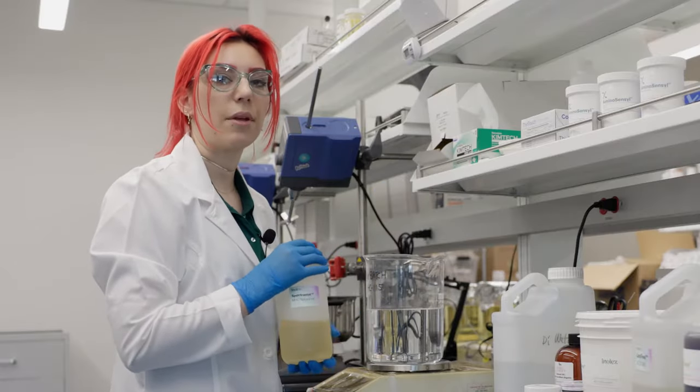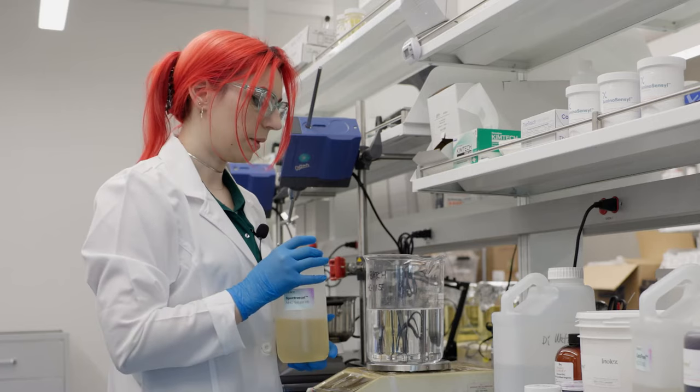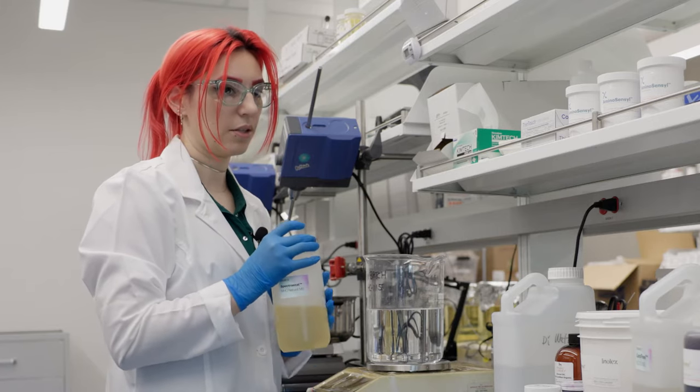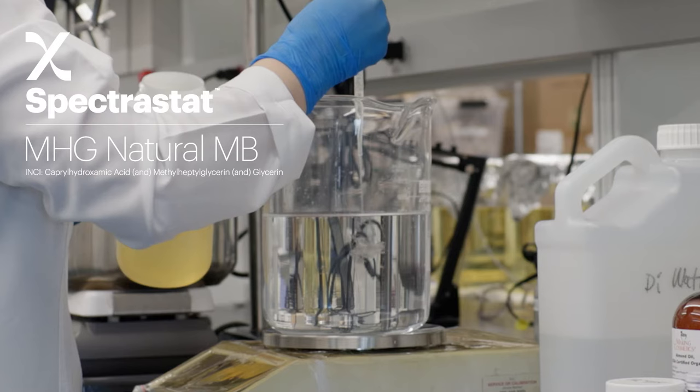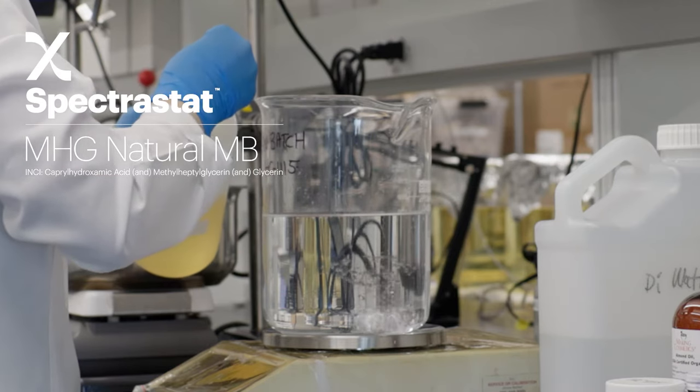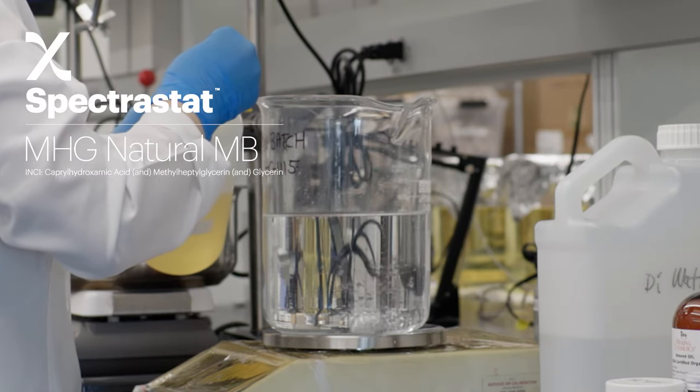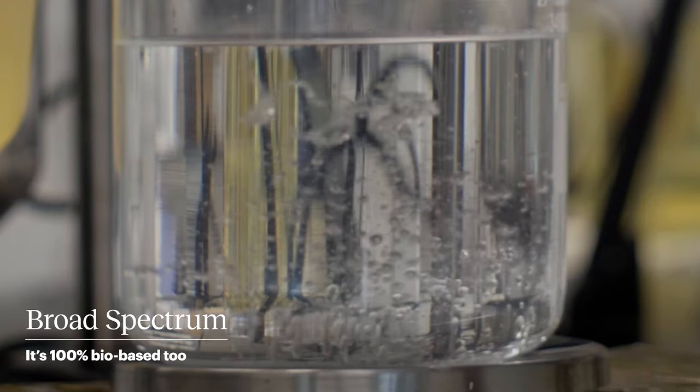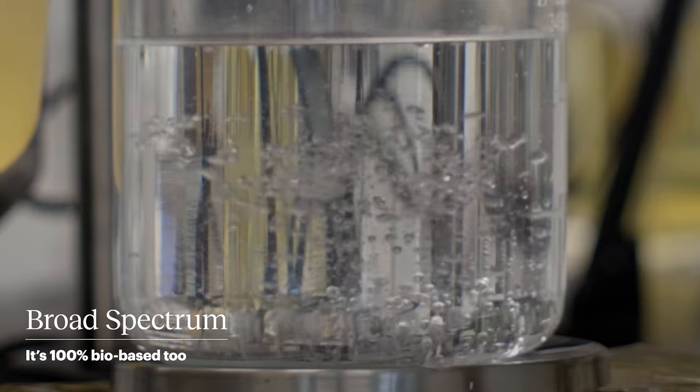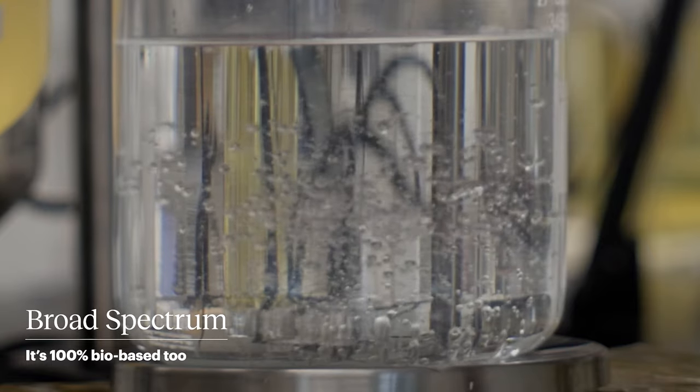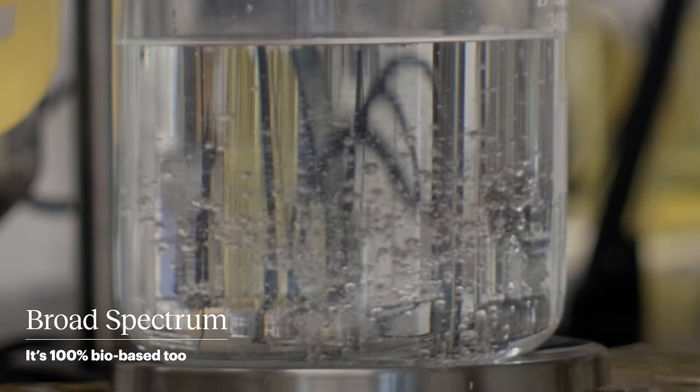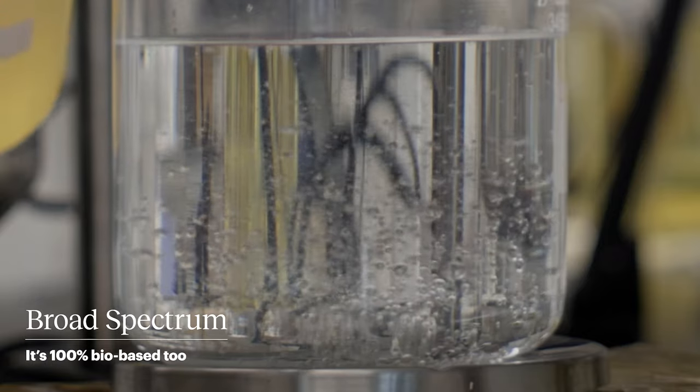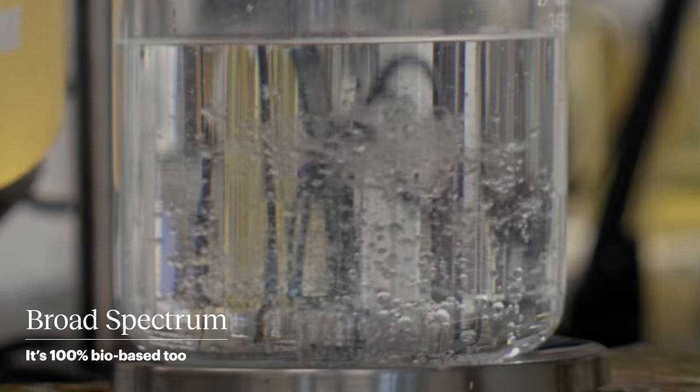The next thing we'll add is Spectrostat MHD Natural. This is going to be our preservation system, and it's going to help with chelating. We're adding 1.2% today, which works out to about 24 grams for a 2kg batch, and this is a broad-spectrum preservation system. Broad-spectrum preservation means that it's going to help preserve the formula from both gram-positive, gram-negative bacteria, and from yeast and mold.